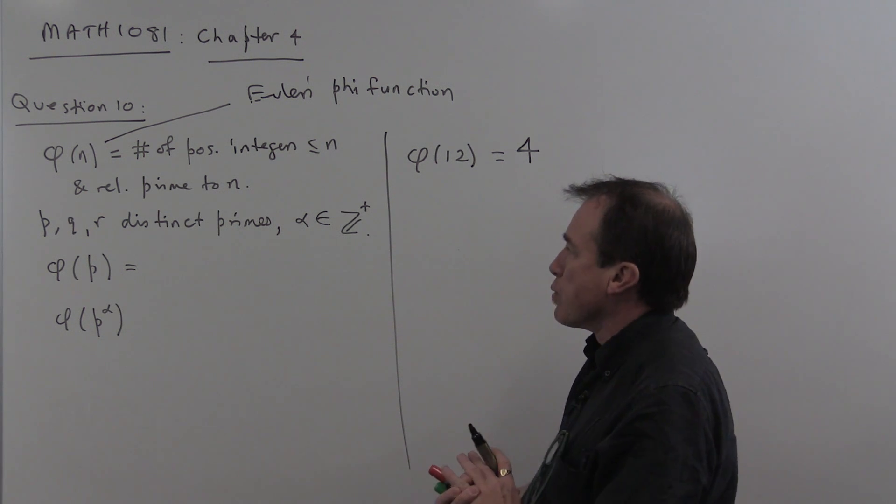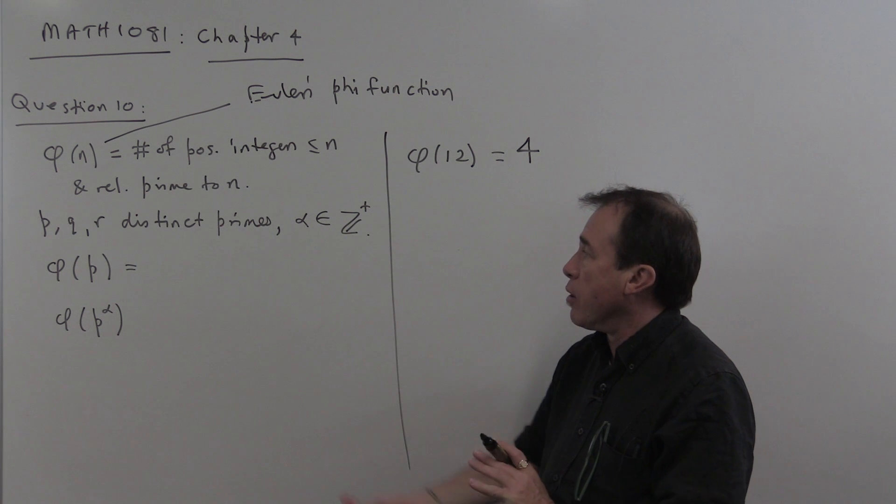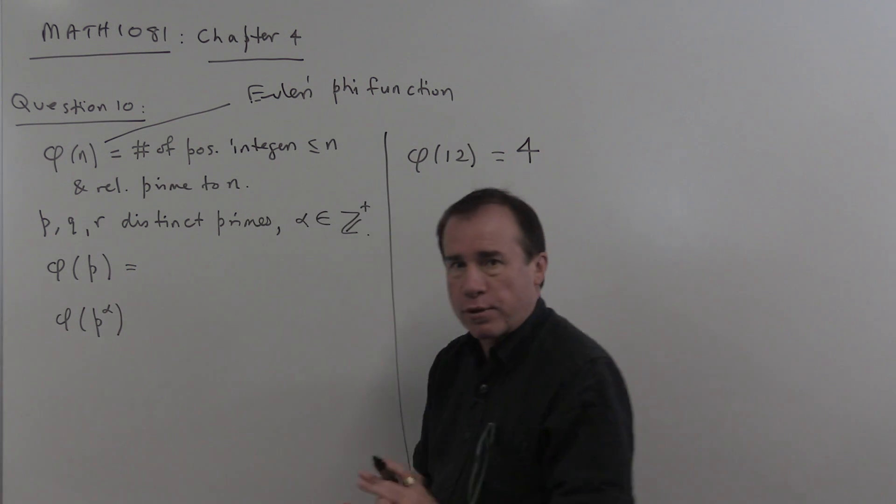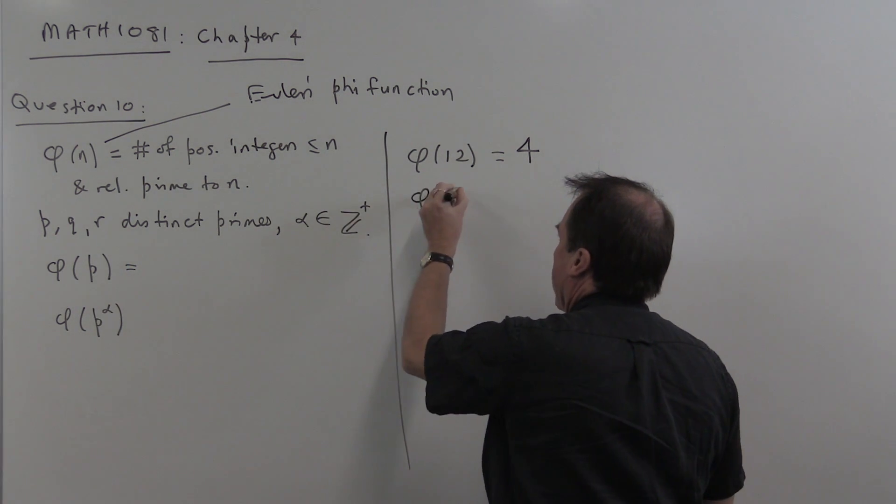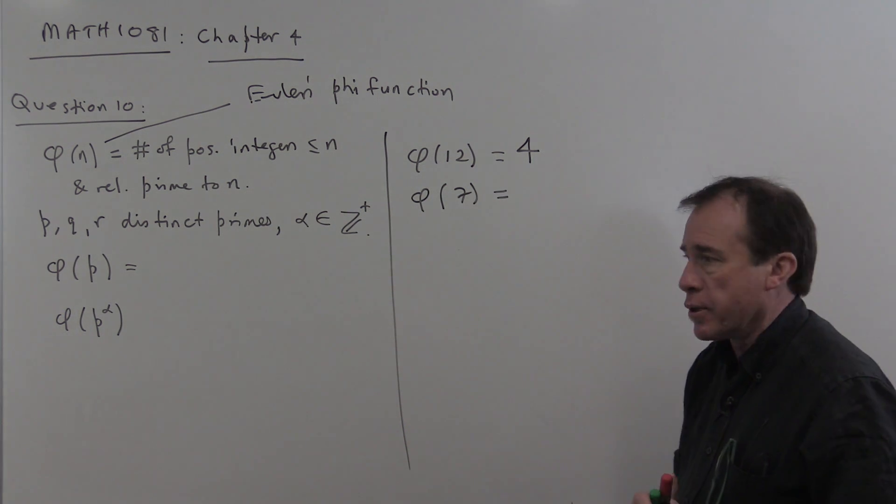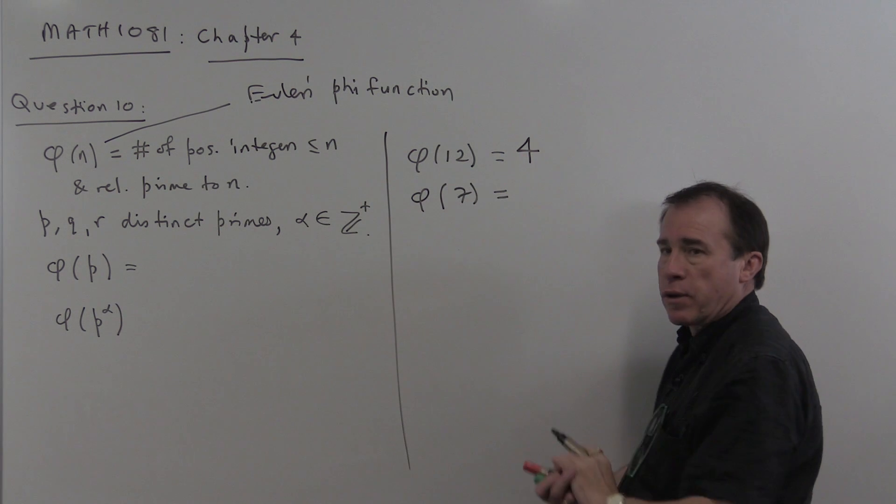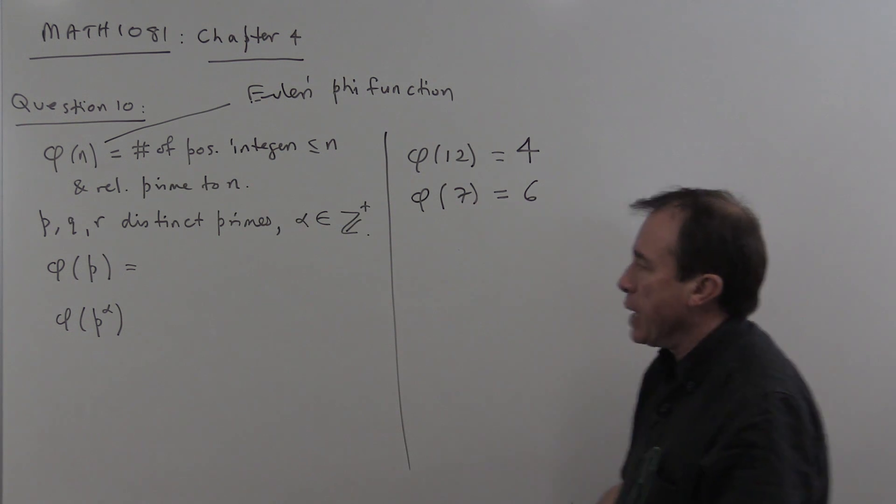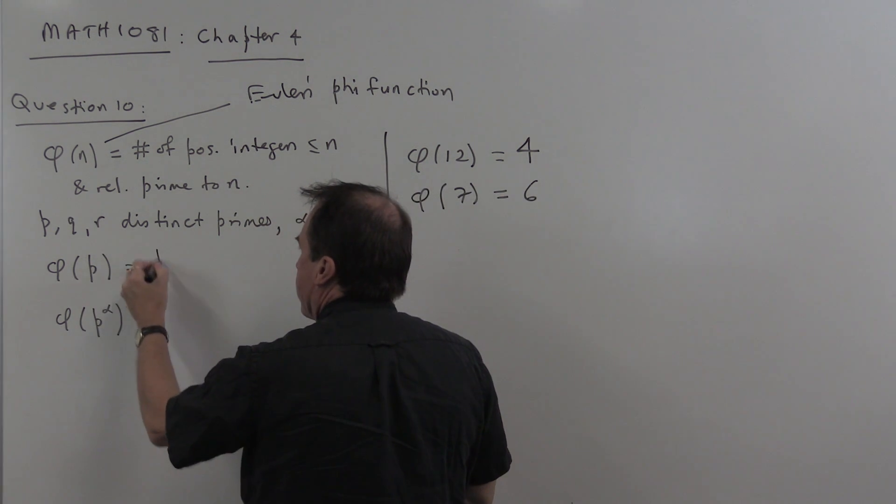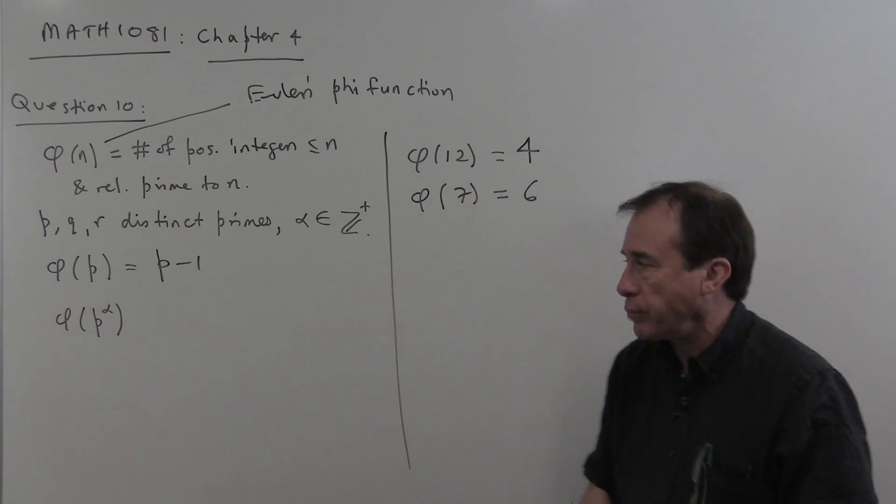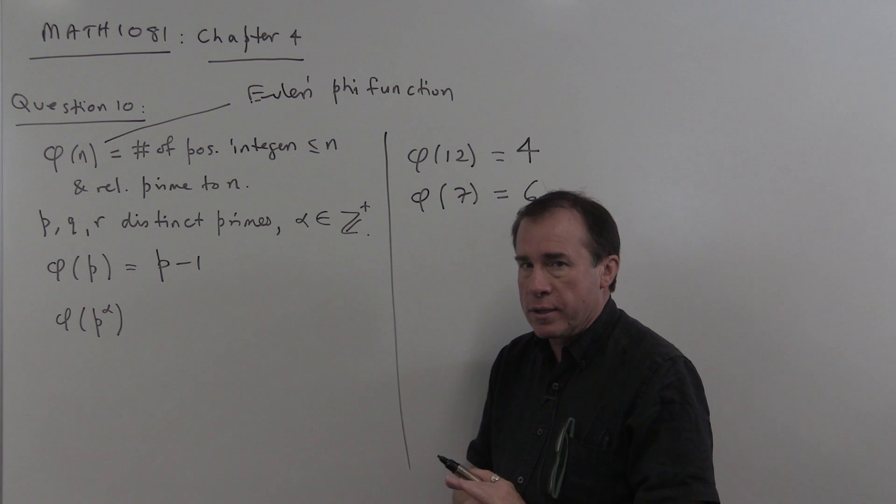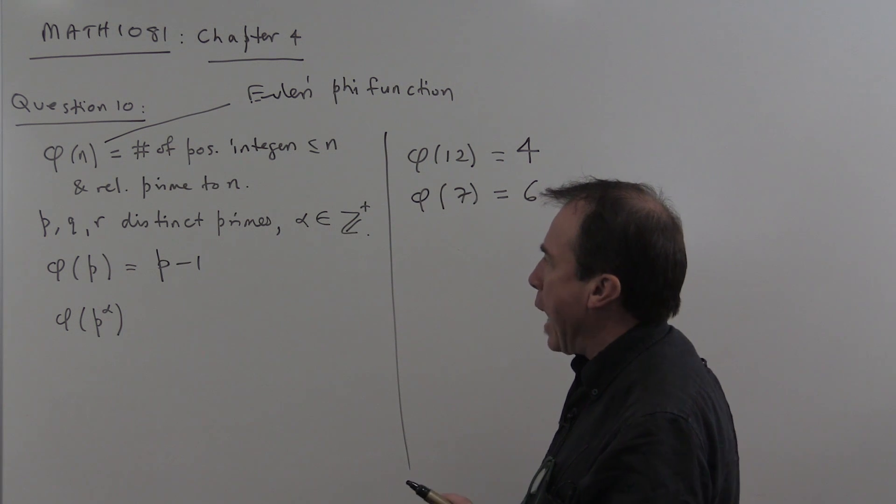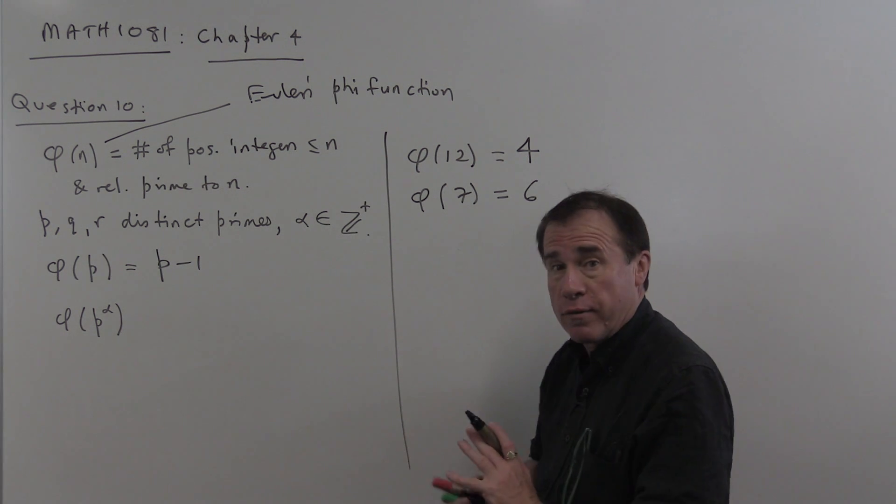So P, Q and R are distinct prime numbers. That means they're all different from each other. And I'll take α to be a positive integer. Firstly, φ(P) is easy. If you've got a prime, for example, if you wanted φ(7), then all the numbers 1, 2, 3, 4, 5, 6 are all relatively prime to 7 and less than it. So φ(7) would be 6. So we can guess immediately that if P is a prime, then φ(P) is just P minus 1.